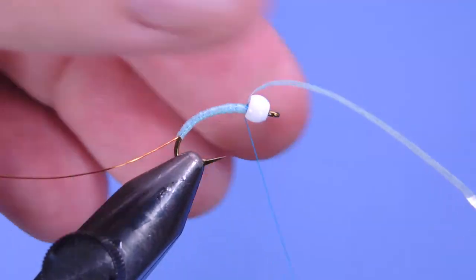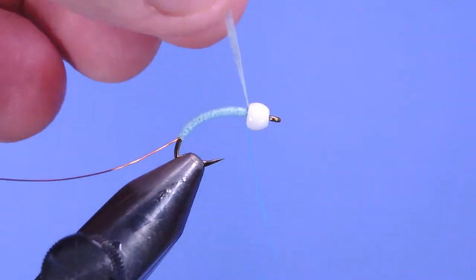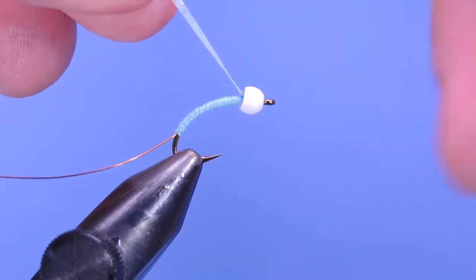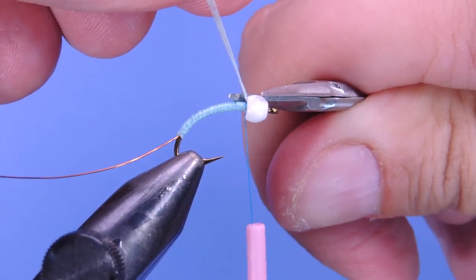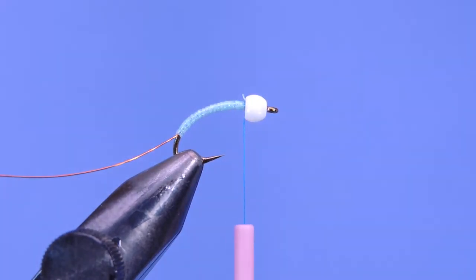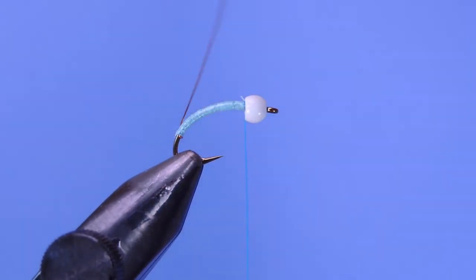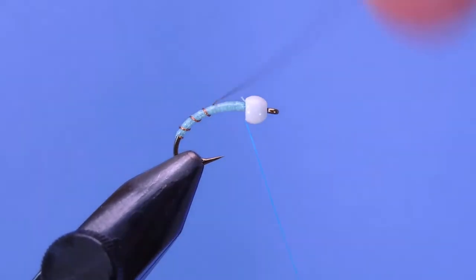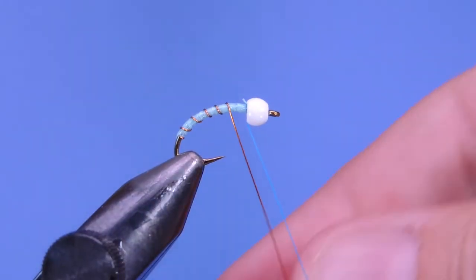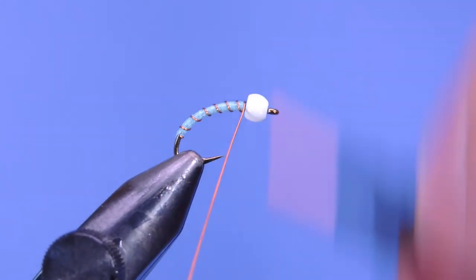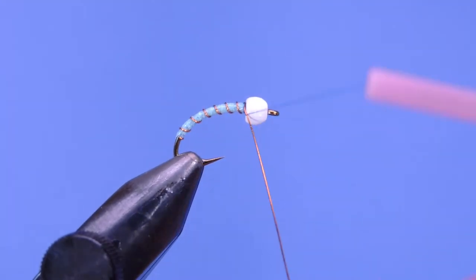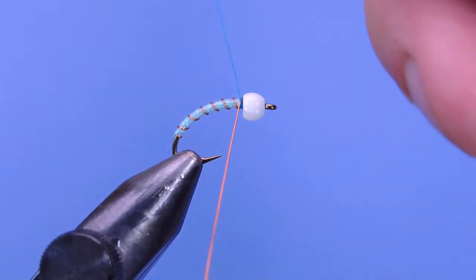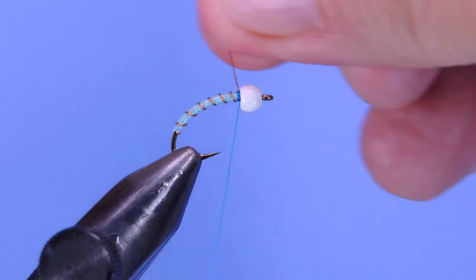I'm just going to wrap that off. Make sure you go on both sides of that. Trim off the excess, and then we're going to wrap up with the fine copper wire. You just want to do open loops with this, just to give some segmentation to the fly body. And then we're going to go on both sides of the wire, just to make sure it's locked in place before we helicopter it off.